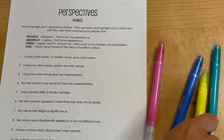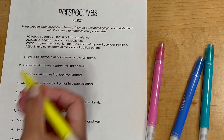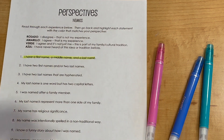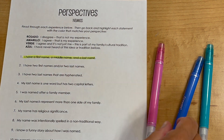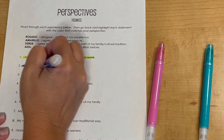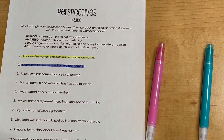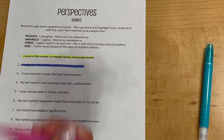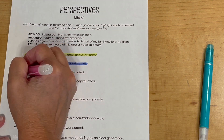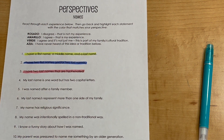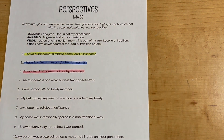You're going to give each student a perspective sheet. These are in English because they are used not only by Spanish classes but also social studies classes, professional development, and such. Students are going to read through a series of statements about a particular cultural topic and they're going to highlight them.